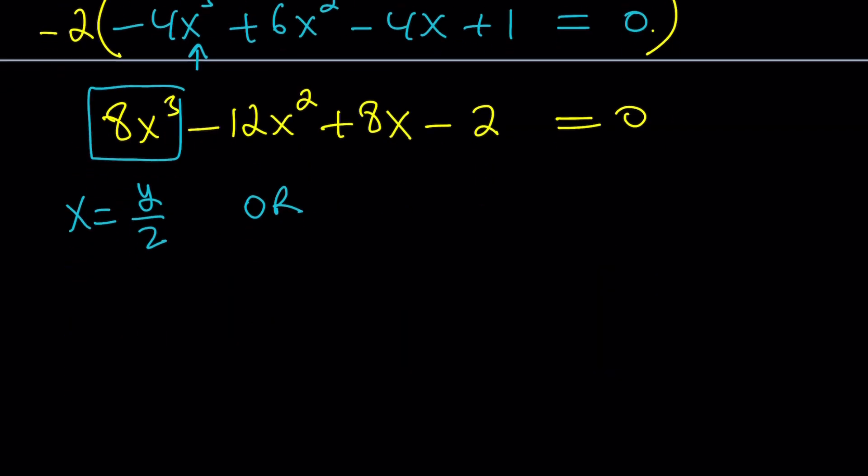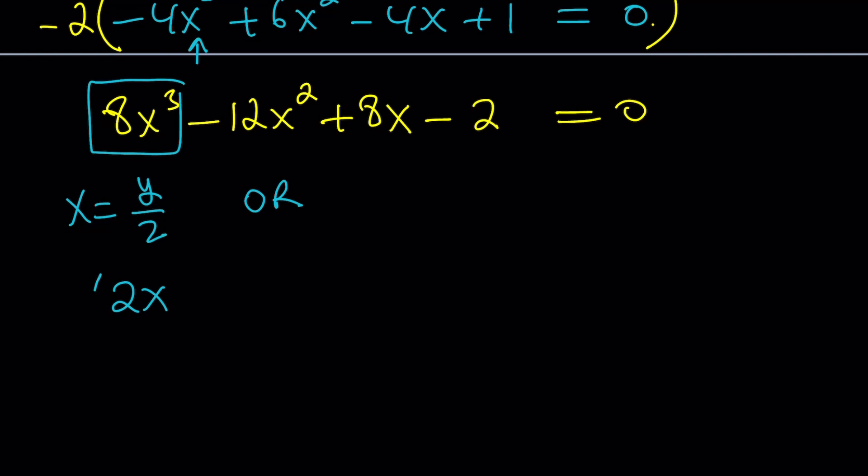Since this is a perfect cube, I can write it as (2x)^3 minus, and I want to get (2x)^2 here so I can continue the pattern. But that gives me 4x^2, I need 12, so I'm going to multiply by 3, and then another 2x inside the parentheses, which should be multiplied by 4 because I have 8x, and then minus 2, constant term at the end.